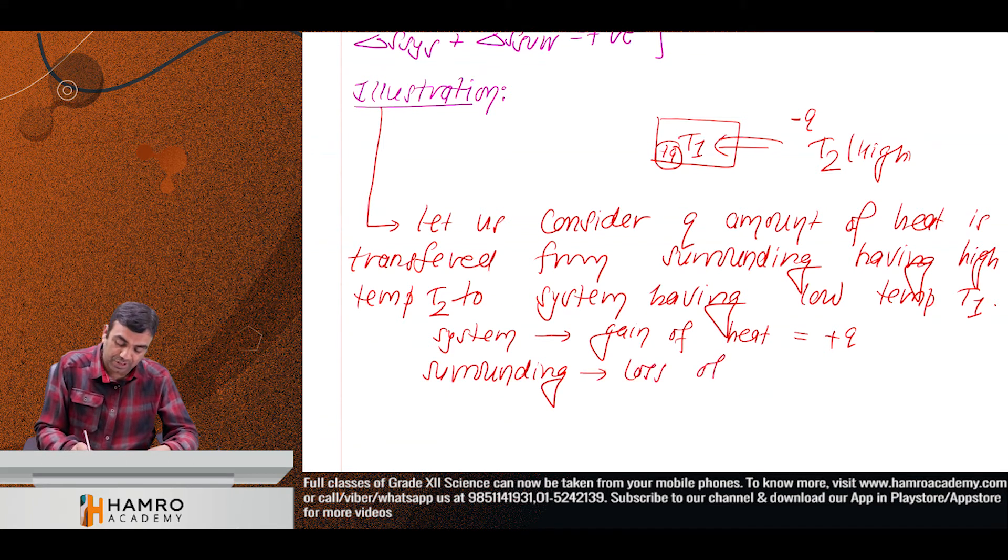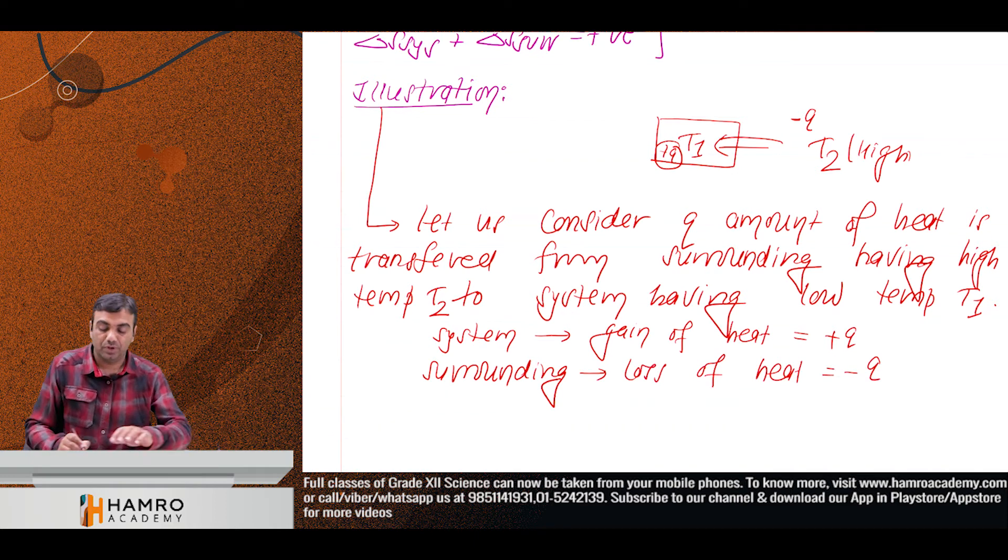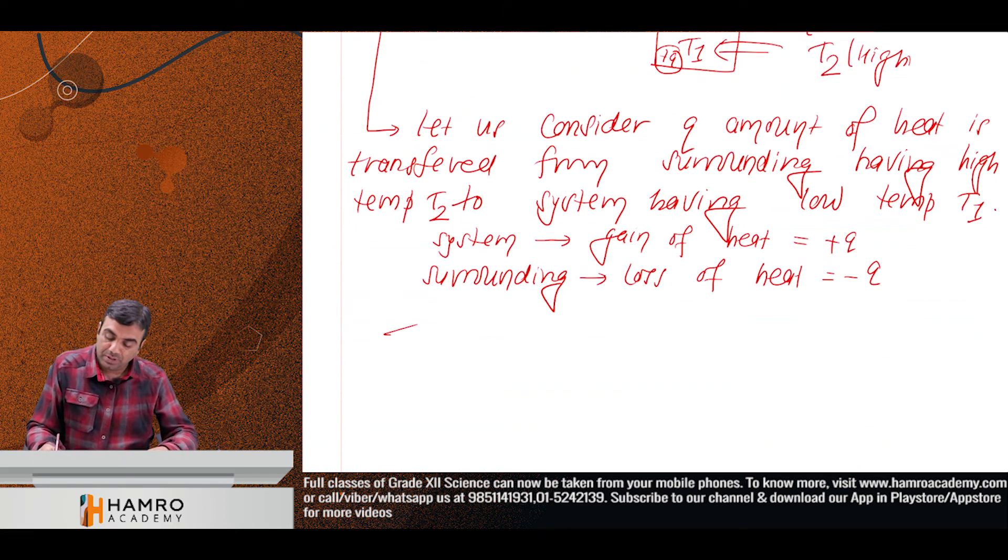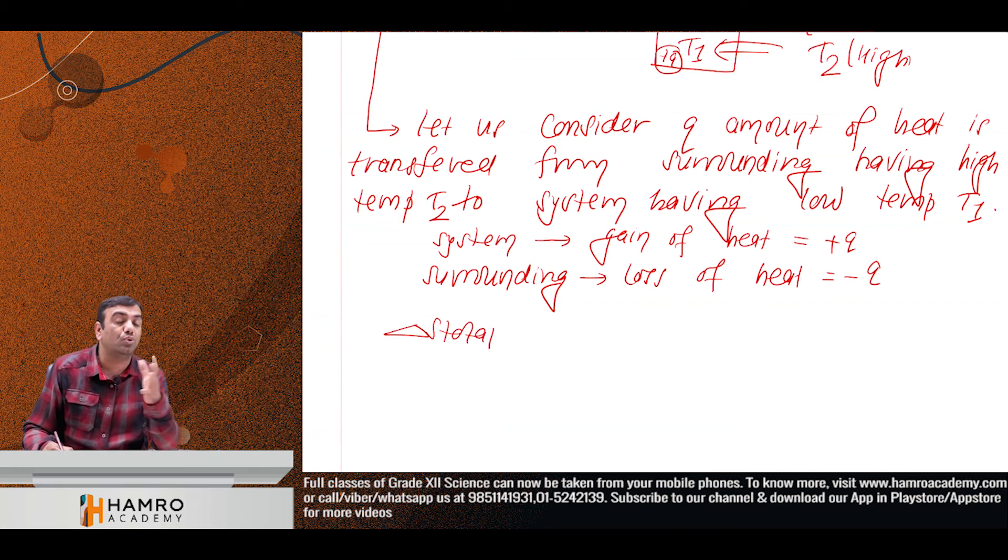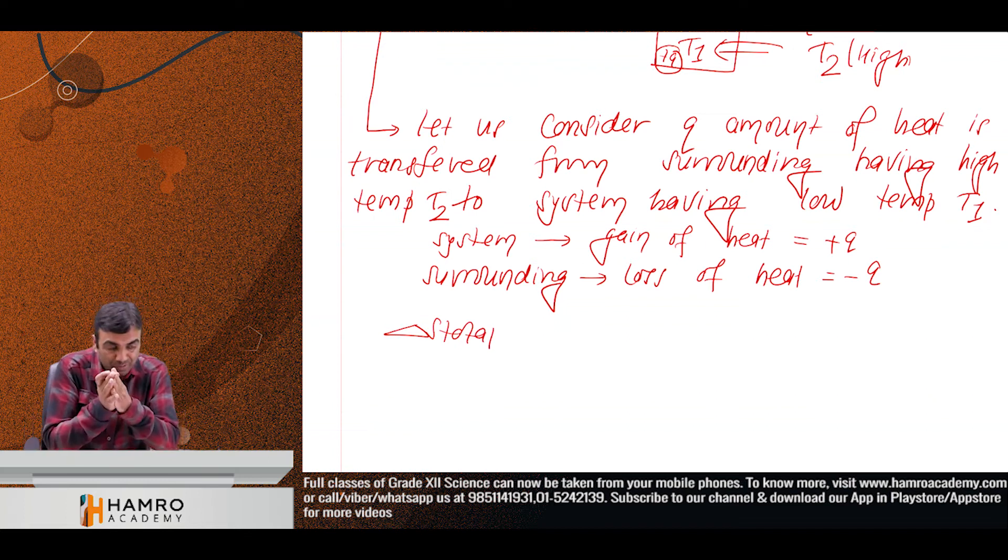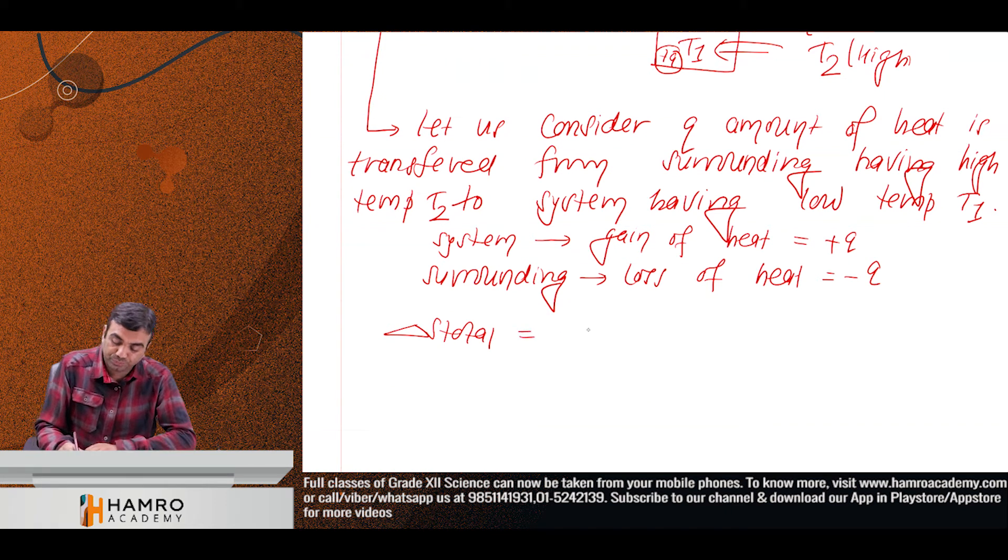Loss of heat, so minus Q. Now delta S total positive, why? Spontaneous point. Heat from higher temperature to low temperature. So we are taking spontaneous process. Now spontaneous process, del S total positive. Del S equals system plus del S surrounding.